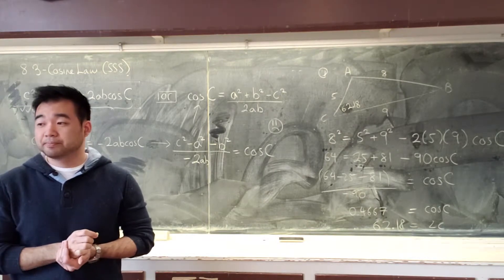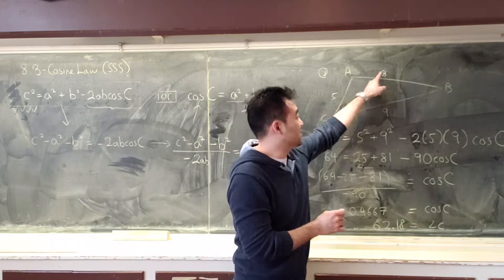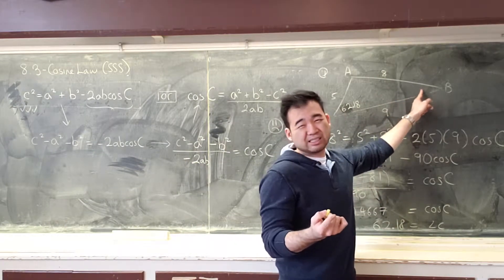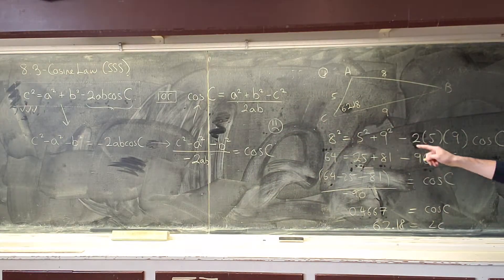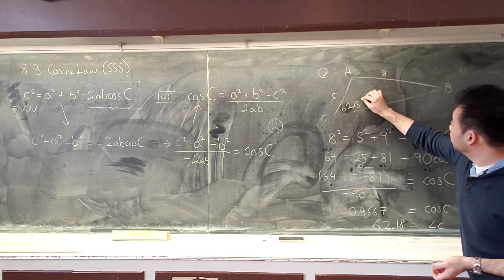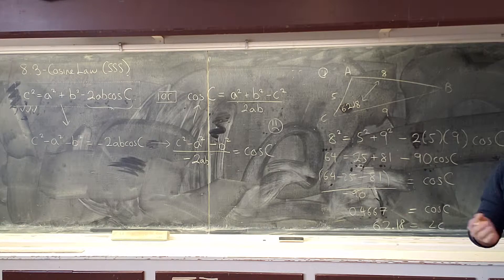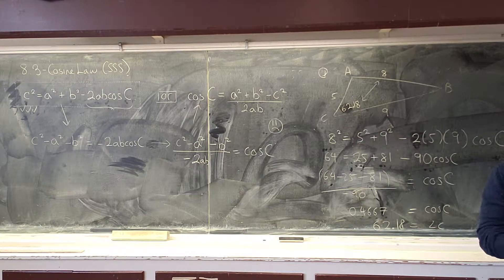Okay, next step. We can use cosine law again, right? Because we have side, side, side, and we're looking for, let's say, angle B. But there's an easier way. Because of this angle, we now have a matching side angle pair. And if we have a matching side angle pair, you can use sine law.